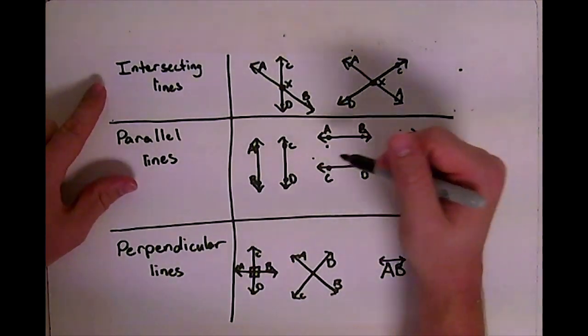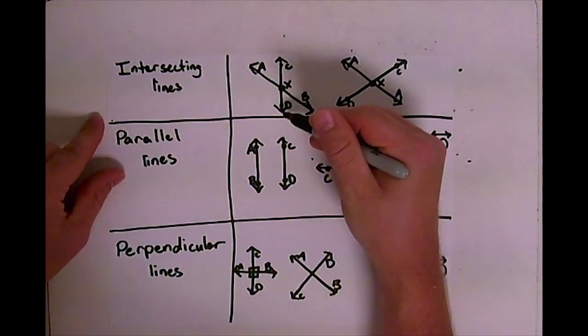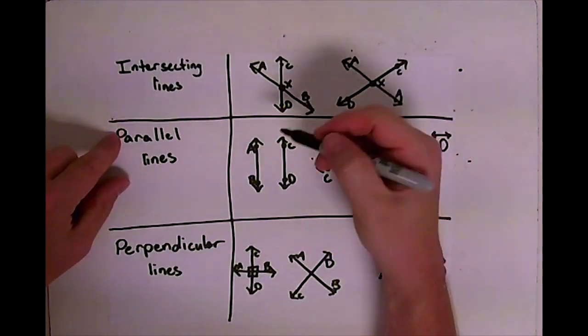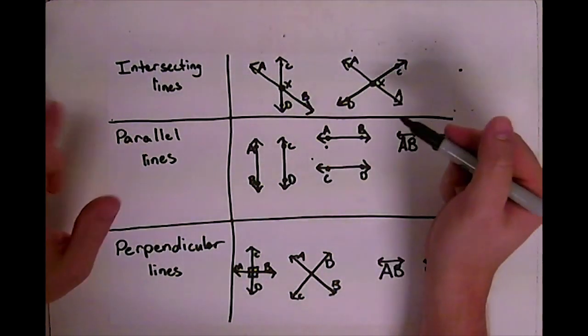Parallel lines are the complete opposite. They never cross. So if this line were to go on forever in either direction or this line were to go on forever in either direction, they're never gonna touch, they're never gonna cross, they're never gonna meet.